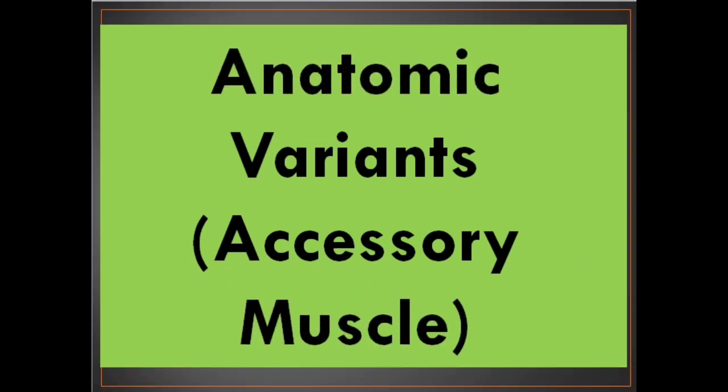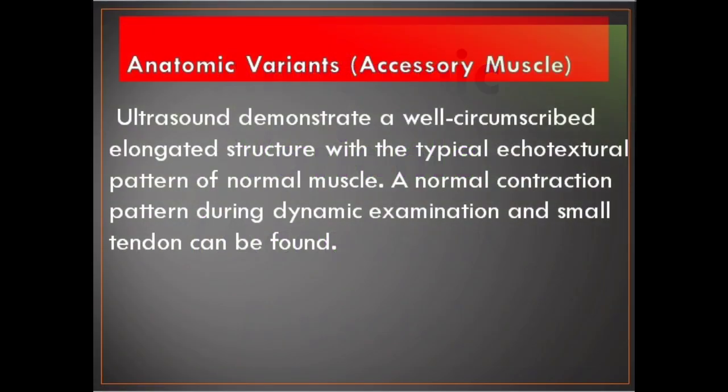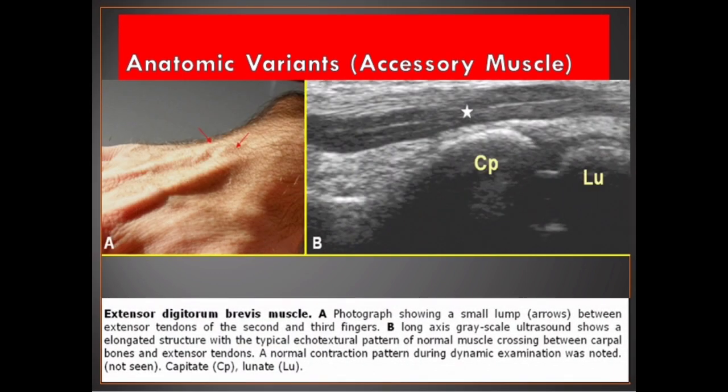Anatomic variants — accessory muscle. Ultrasound demonstrates a well-circumscribed elongated structure with the typical echotextural pattern of normal muscle. A normal contraction pattern during dynamic examination and a small tendon can be found. This image shows an example of an accessory muscle.